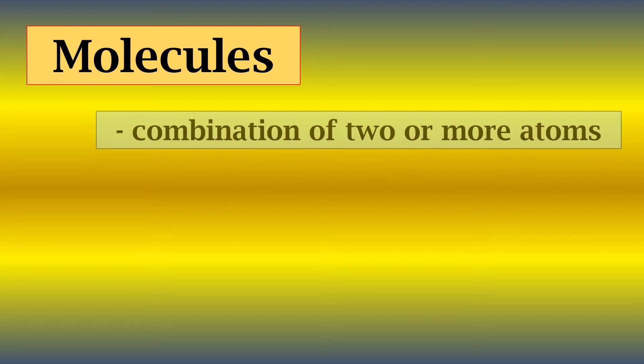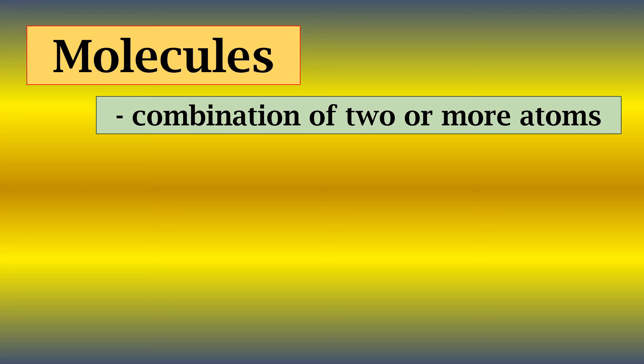Now let's talk about molecules. How can we differentiate molecules from atoms? An atom is a single element with no mixture. For example, pure oxygen. But when it becomes a molecule, there is a combination of other elements. Molecules are the combination of two or more atoms.